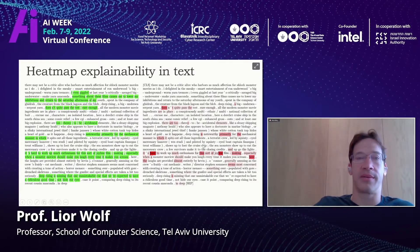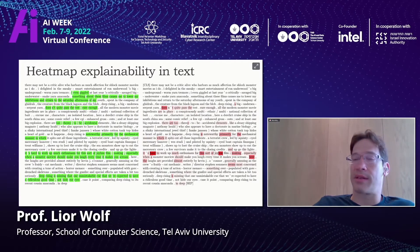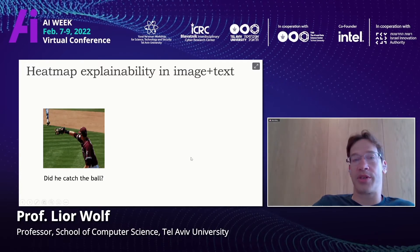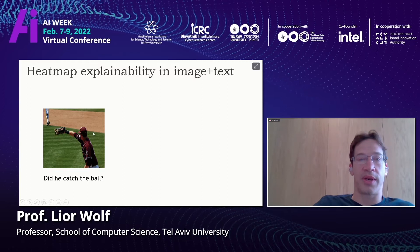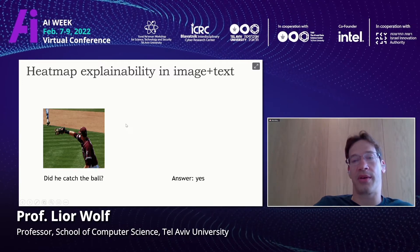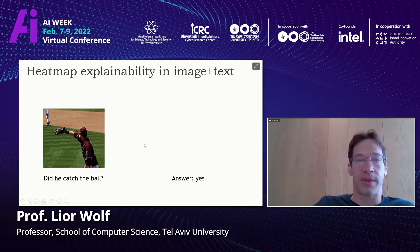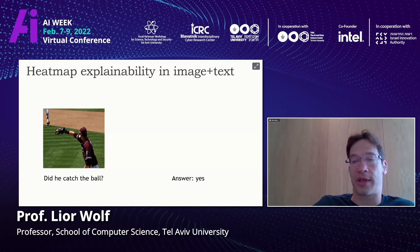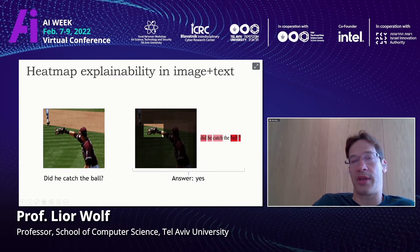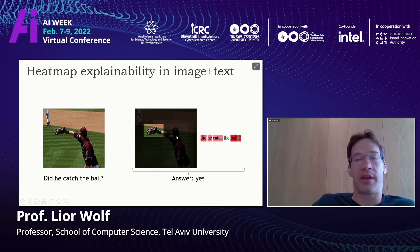This works for any task that transformers handle effectively, not just sentiment analysis. Consider a task combining images and text: given an image and the question 'Did he catch the ball?', the transformer answers 'yes.' The explainability method highlights the relevant part of the image and the relevant part of the sentence that led to this conclusion — so we can trust it much more.